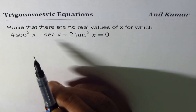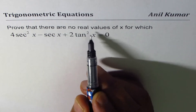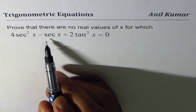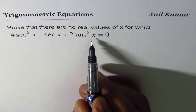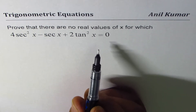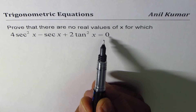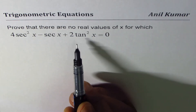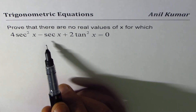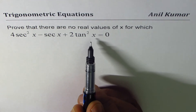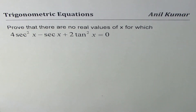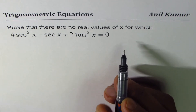The question here is: prove that there are no real values of x for which 4sec²x minus sec x plus 2tan²x equals 0. It is not an identity — it is a trigonometric equation in which we have to show that there exists no value of x for which this equation can be true.